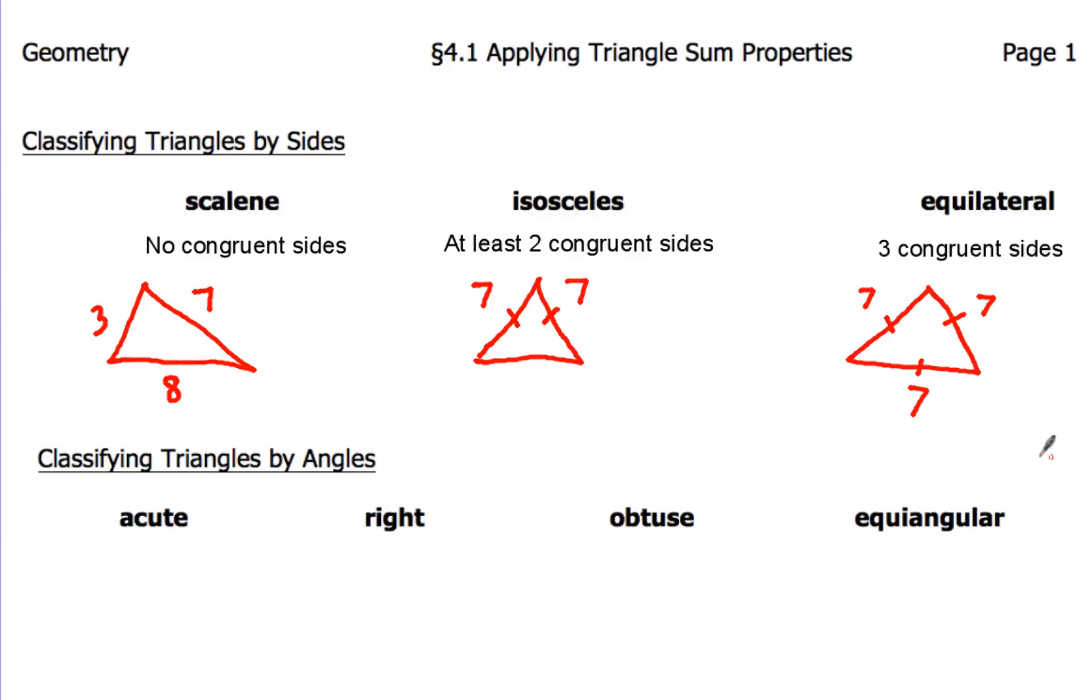So equilaterals have all three sides the same, and isosceles only have two congruent sides, while scalene, they've got nothing going on. None of their sides are the same length.